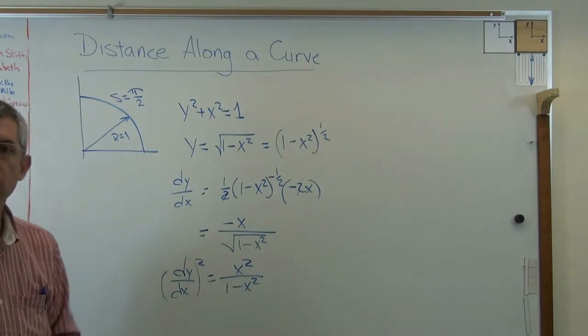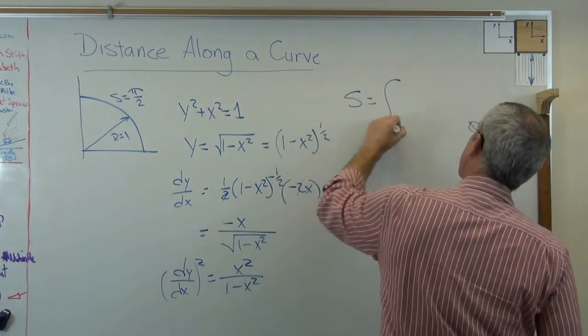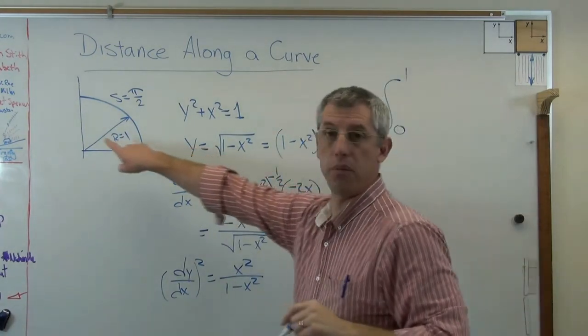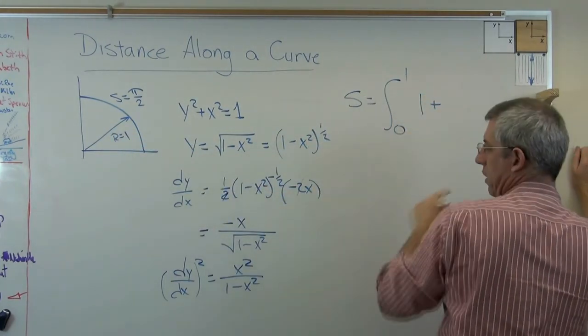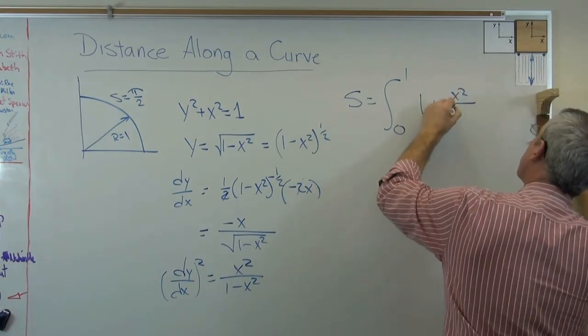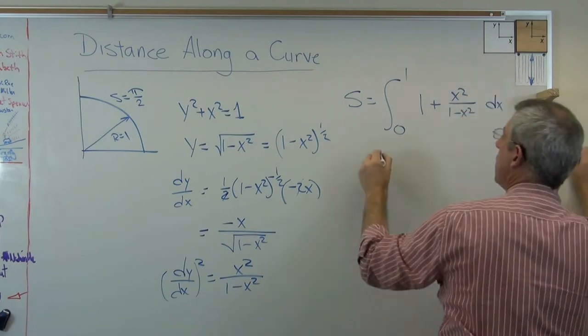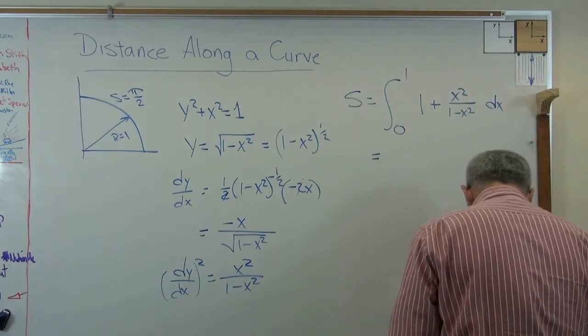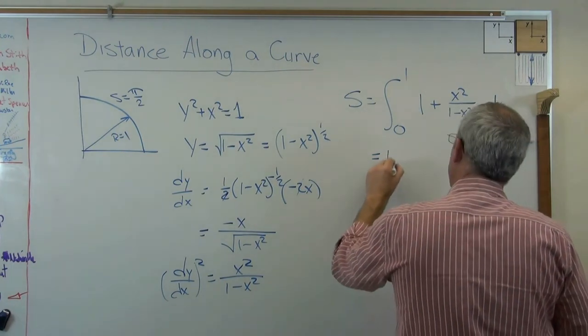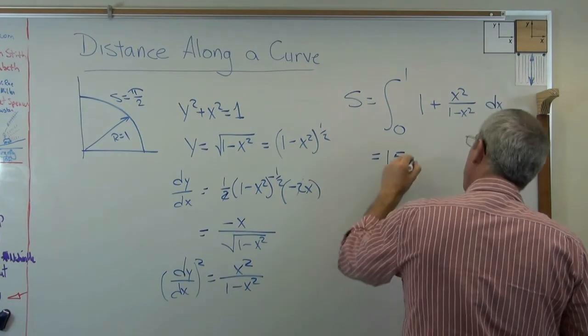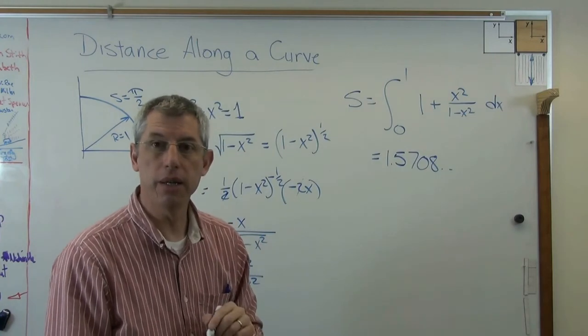All right, so I've got all the parts I need to calculate that length. So s now equals the integral again from 0 to 1 because of the end points I've chosen. And all I've got to do now is say 1 plus that expression right there, x squared over 1 minus x squared, and integrate that whole mess with respect to dx. You do that and you get, which is very cool, let's see, 1.5708. There's some other numbers out there. And that indeed is pi over 2.